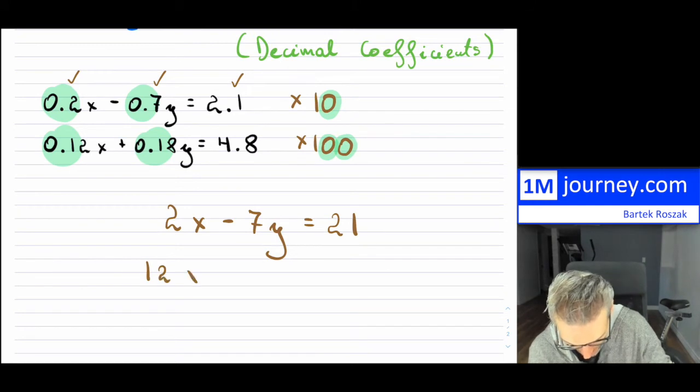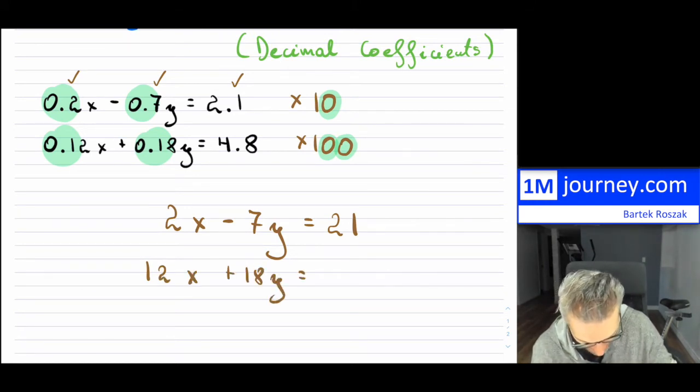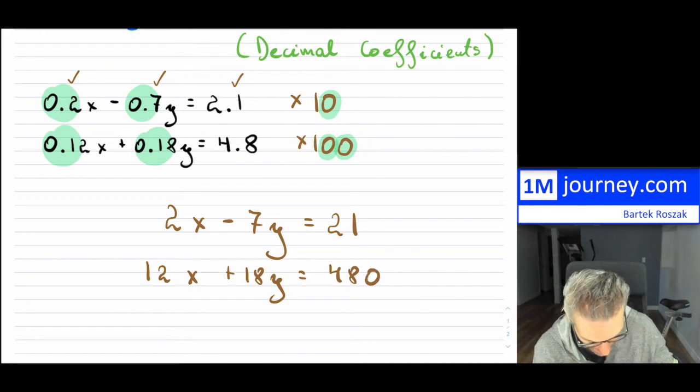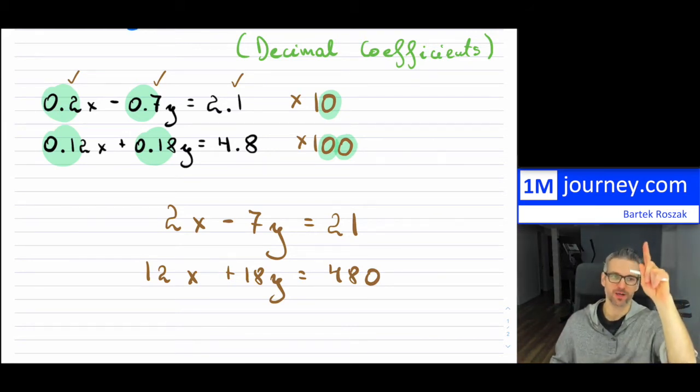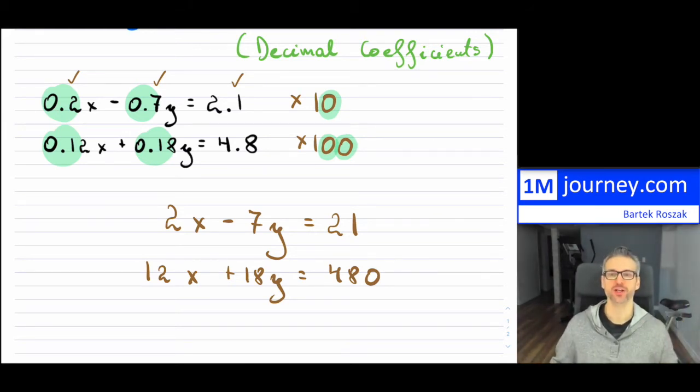So now if I multiply it by 100, that second line will turn into 12x plus 18y is equal to 480. And now you have turned this problem into integer coefficients, which I've done an entire video on giving you examples. So I'm going to link a video up above so that you can take a look at the elimination method using integer coefficients, because decimal coefficients, it's just change it back to integers and that's it.